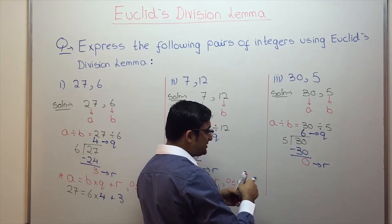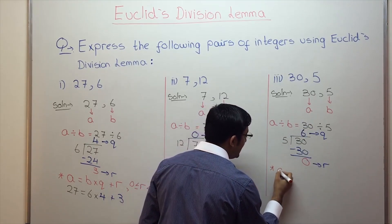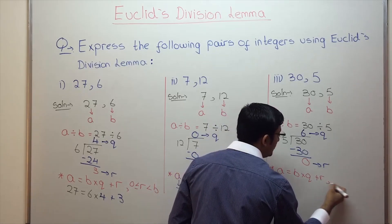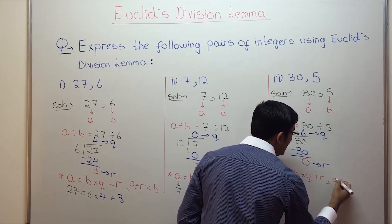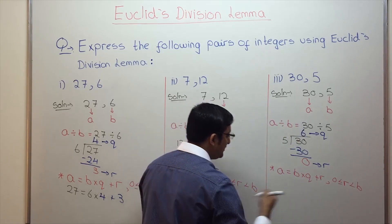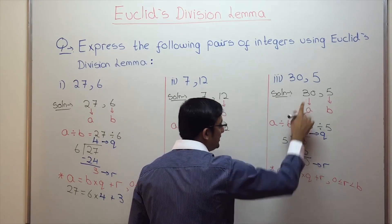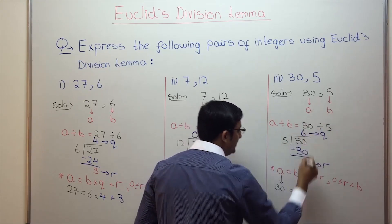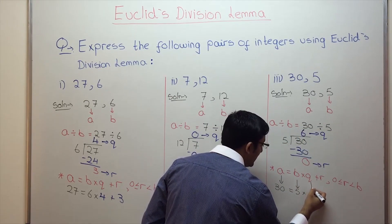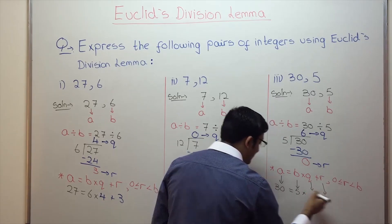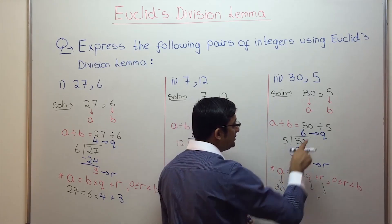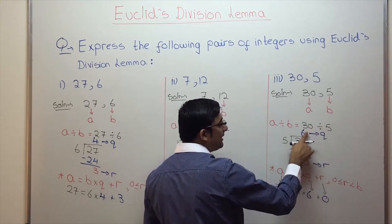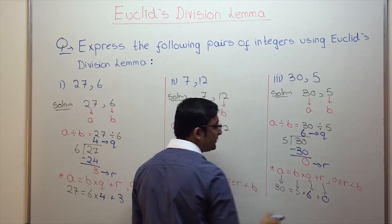Now state Euclid's division lemma: A is equal to B into Q plus R, where R is greater than or equal to 0 and less than B. Plug in the values. A is 30, B is 5, Q is 6, R is 0. So 30 equals 5 into 6 plus 0. That is 30 divided by 5 is 6, remainder 0.